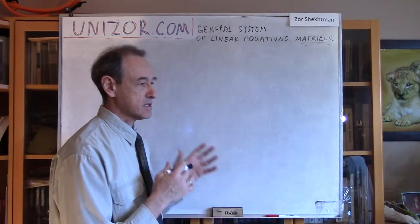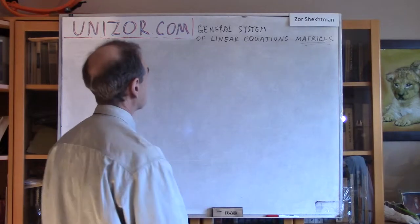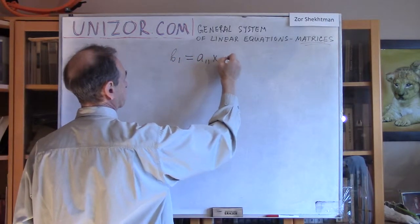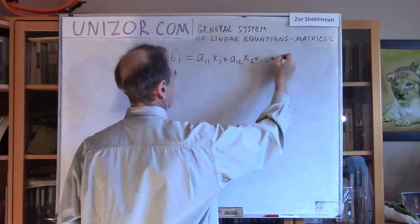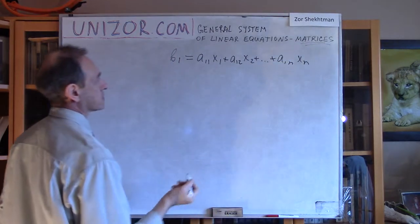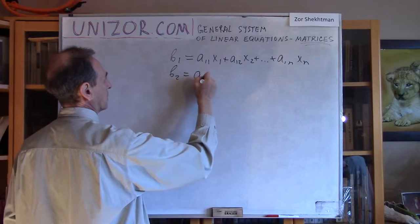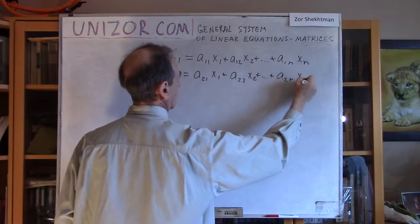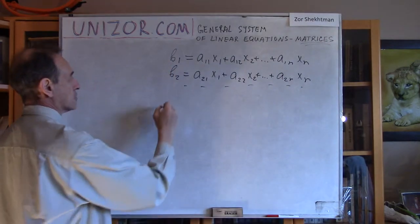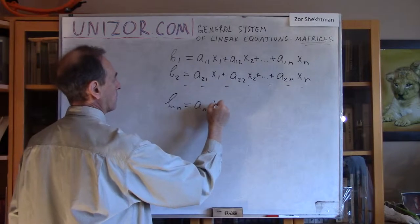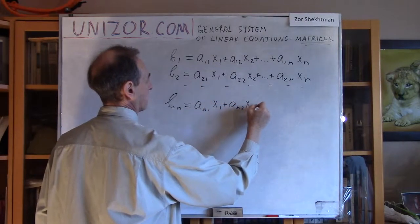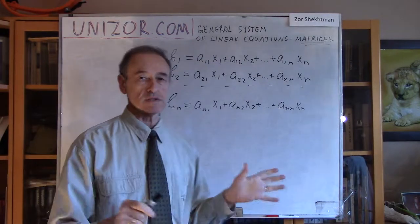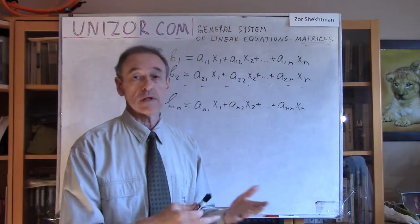Let's consider the system of N linear equations with N variables. It looks approximately like this. So that's the first equation. Then we have the second equation with different coefficients. And then we have all other equations and the last one, which would look like this. We have to solve this system, and we know there's a certain methodology of how to approach this.